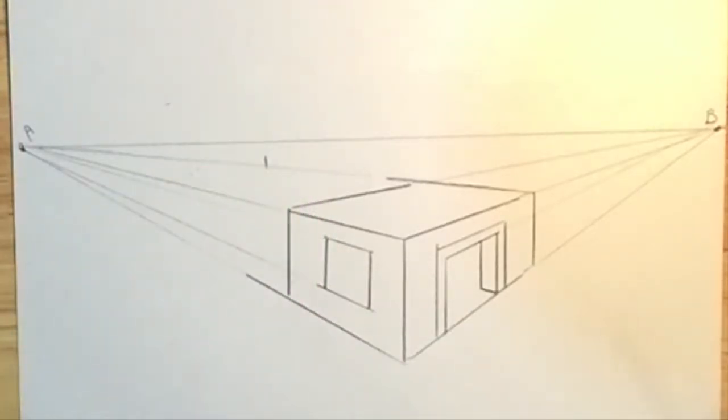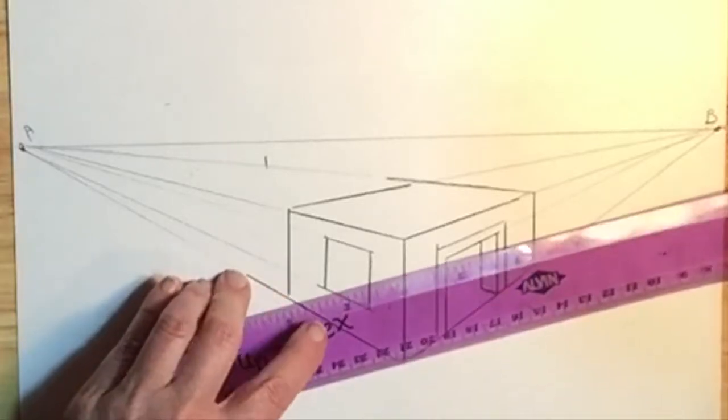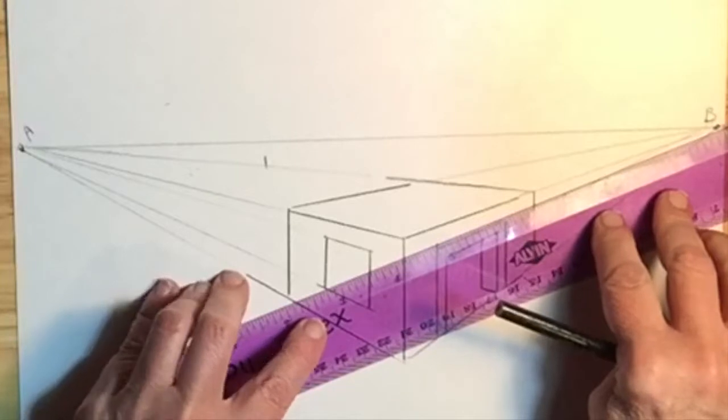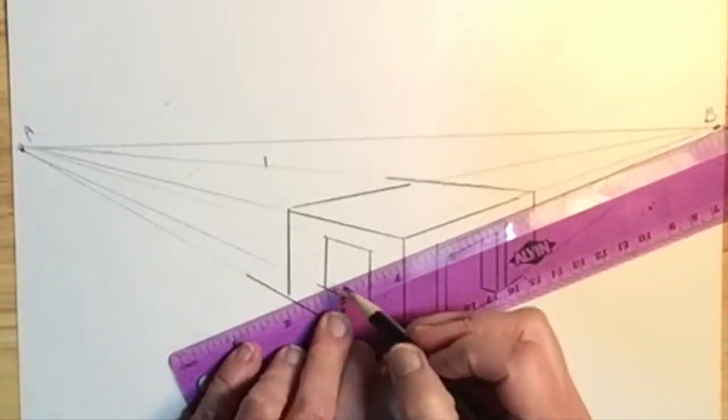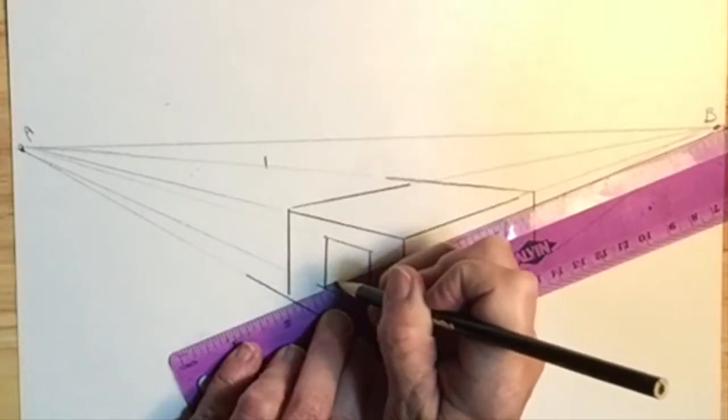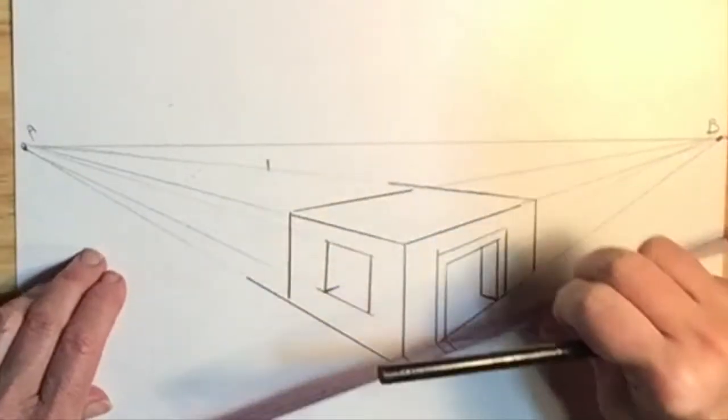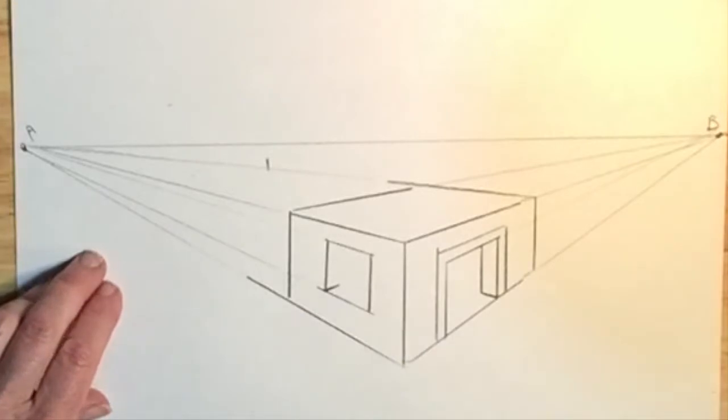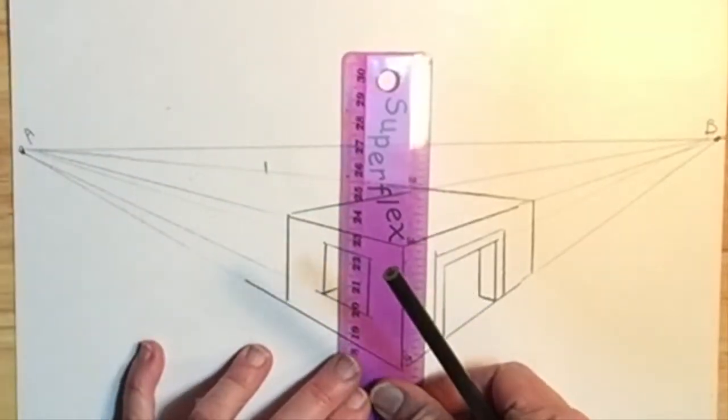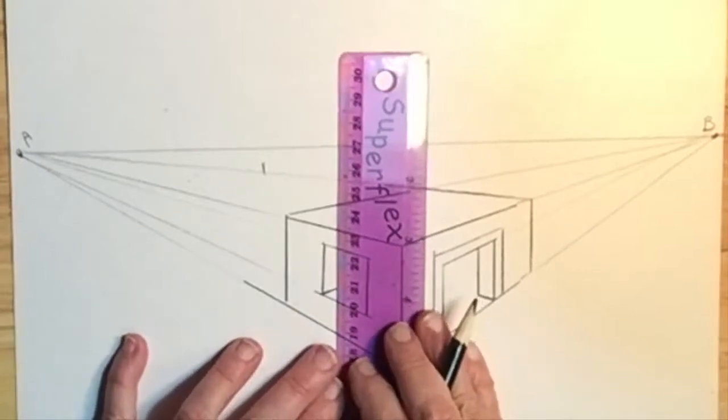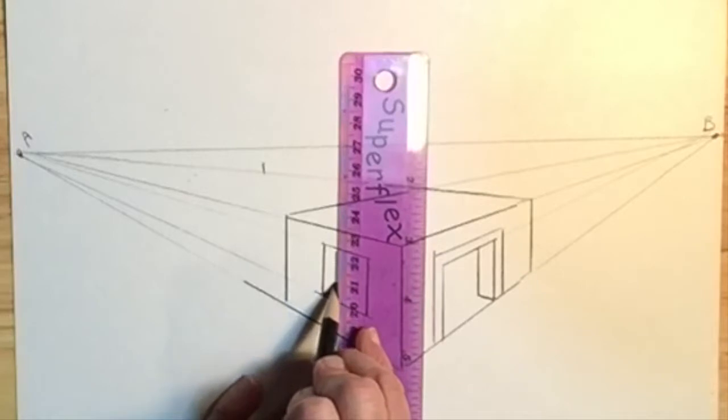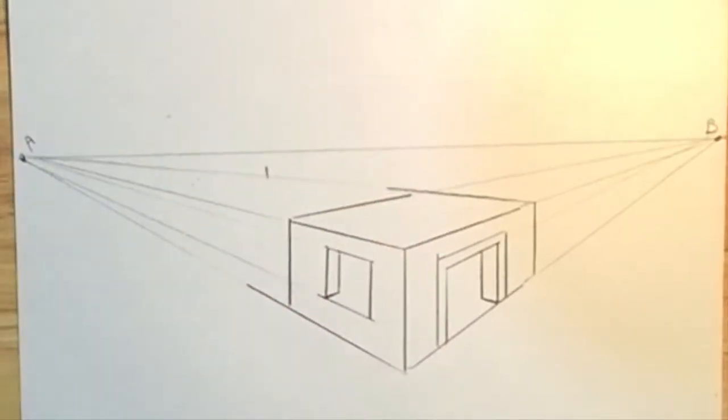Now I'll add thickness by lining up this corner with B and only making a very short line, the thickness of the window frame, and this is what you have. Then I draw a vertical line to complete that side of the window casing, like that.